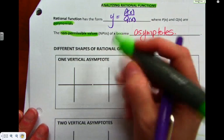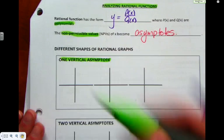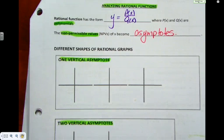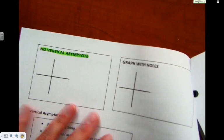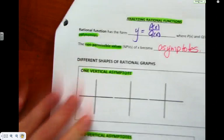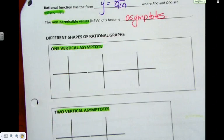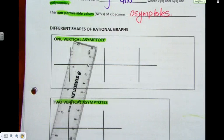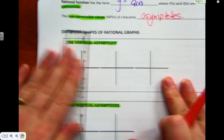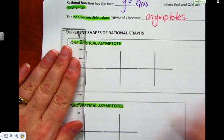We are going to look at one-vertical-asymptote graphs, two-vertical-asymptote graphs, and then no vertical asymptotes, and then one we haven't seen yet. Most of this we looked at last year — I'm just going to sneak a few little things in. So a one-vertical-asymptote graph has — get this — one vertical asymptote.